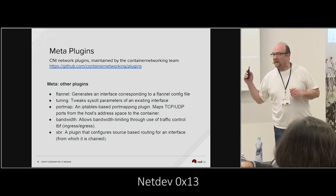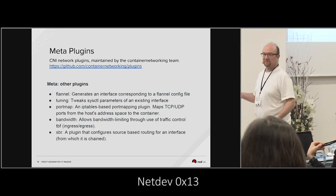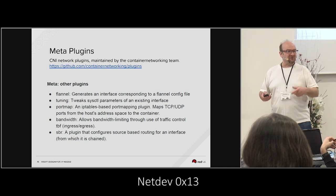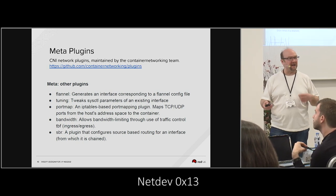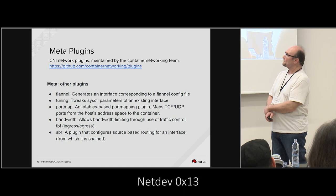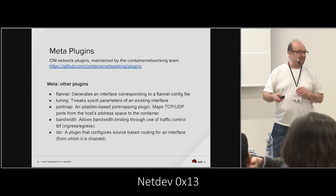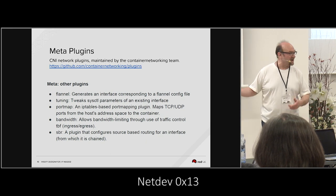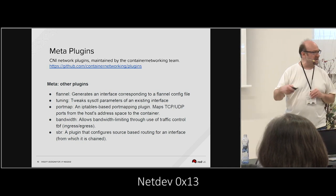Port map is an important one because the world wants NAT, and this is the way that when a device is added to a container, the host can get to it via port mapping. Once the address is assigned, CNI will start adding rules to IP tables so you can start hitting port 8080 on the host and port forward it into the container on whatever port you want — things you would have done with IP tables and masquerading anyway, but now automated. Bandwidth plugins allow you to use TC rules to start limiting what can go in and out of a container. There's also source-based routing, which is fairly new to the master repository.